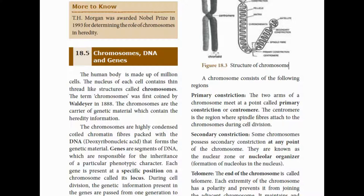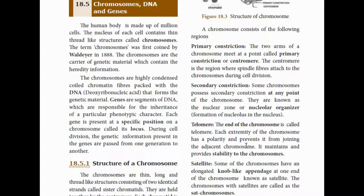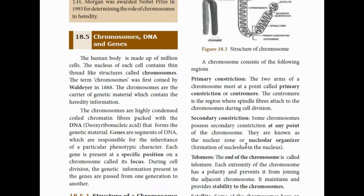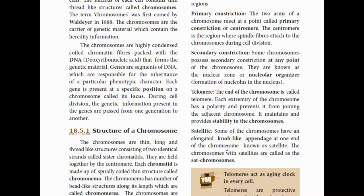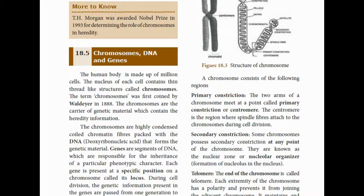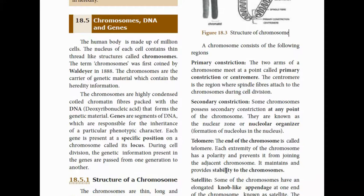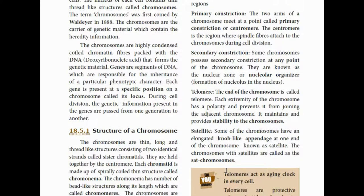Next is the telomere. Telomeres are found at the ends of chromosomes. Each extremity of the chromosome has a polarity. Human cells have 23 pairs of chromosomes, and each chromosome end has polarity so that the ends do not attract other chromosomes — they repel each other. Some chromosomes also have a satellite, which is a knob-like structure found at the end of certain chromosomes.